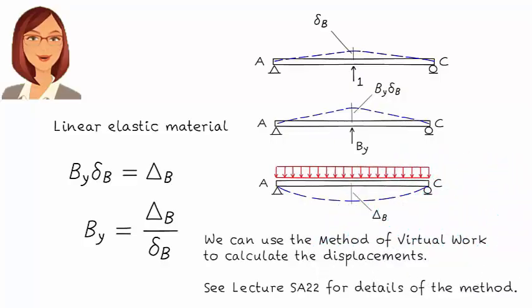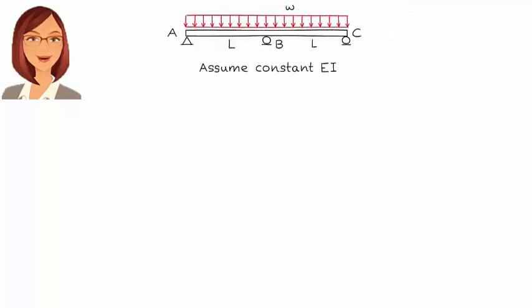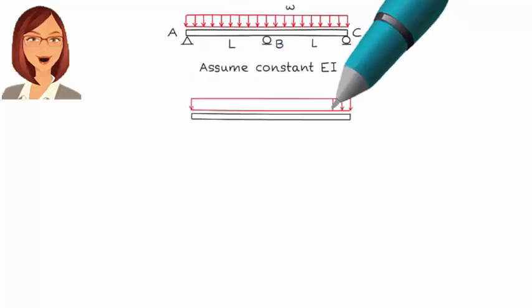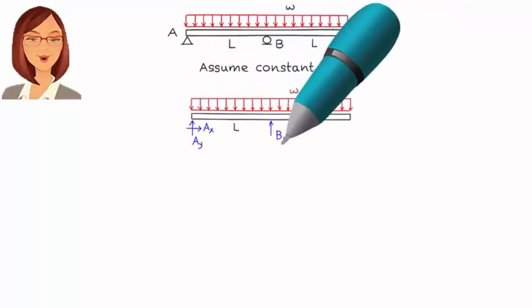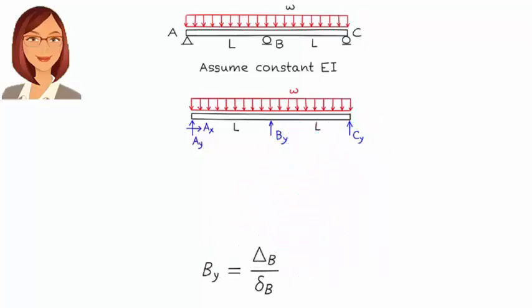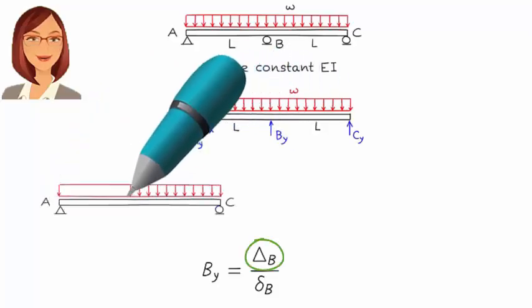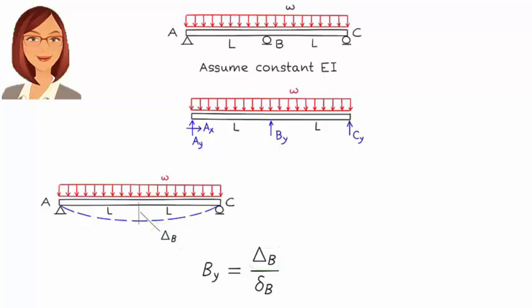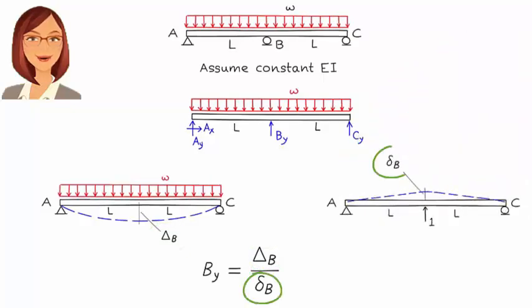Let's go through the process of actually analyzing the beam. Segments AB and BC each have a length of L. The intensity of the distributed load is W, and the modulus of elasticity and the beam's moment of inertia are constant. Here is the free body diagram of the beam. The numerator represents vertical displacement at B under the uniformly distributed load, and the denominator represents vertical displacement at B under an upward unit load applied at B.